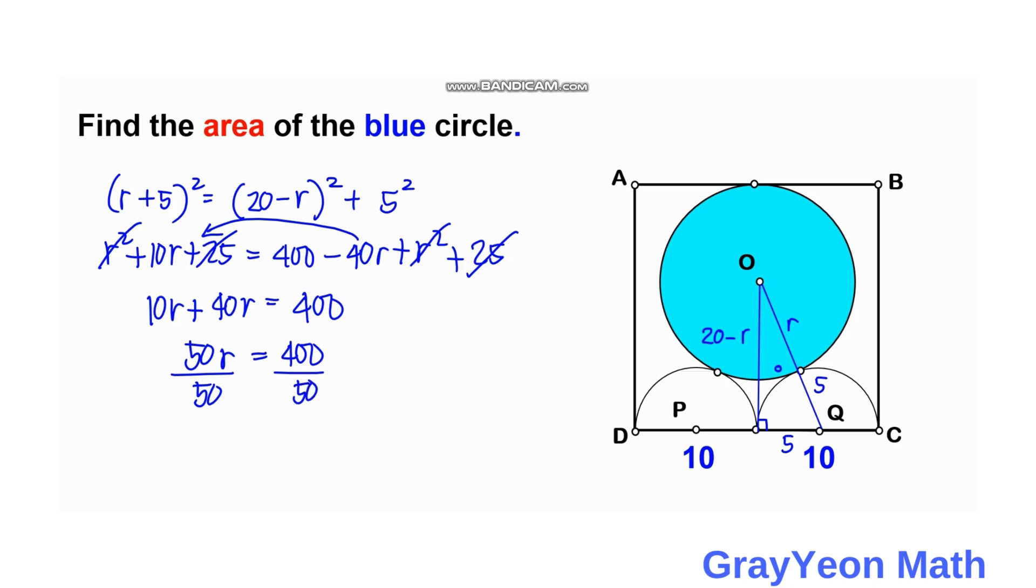R is equal to 400 divided by 50. R is equal to 8.